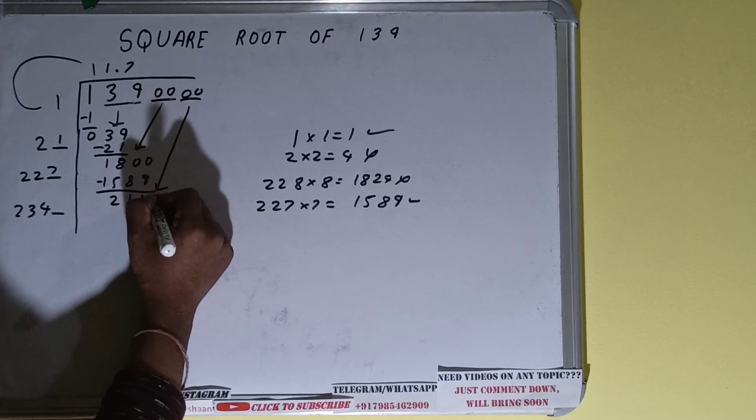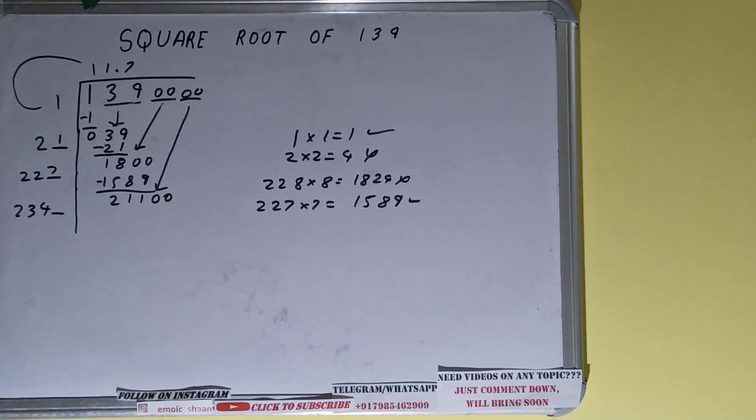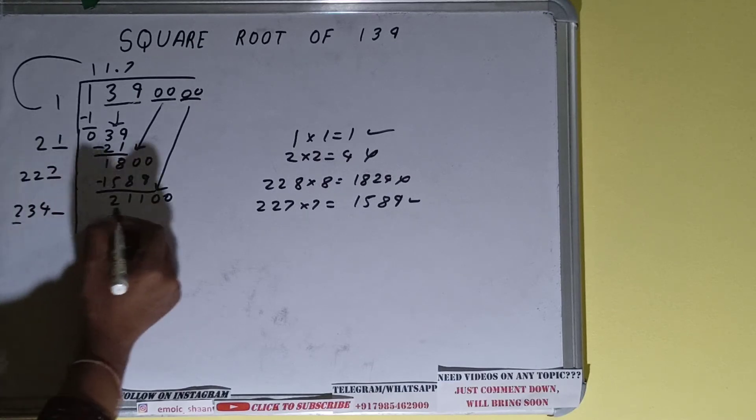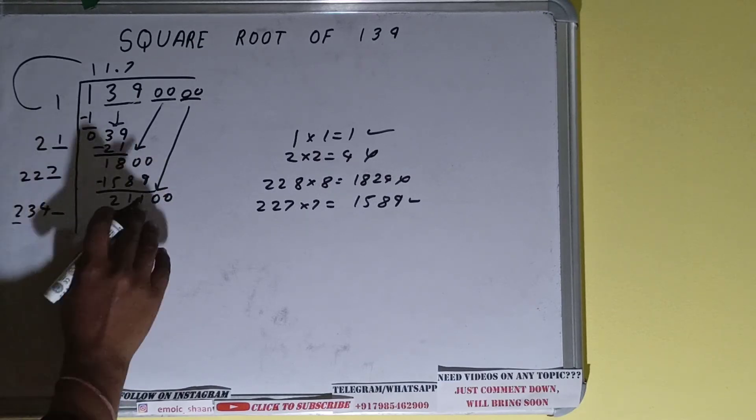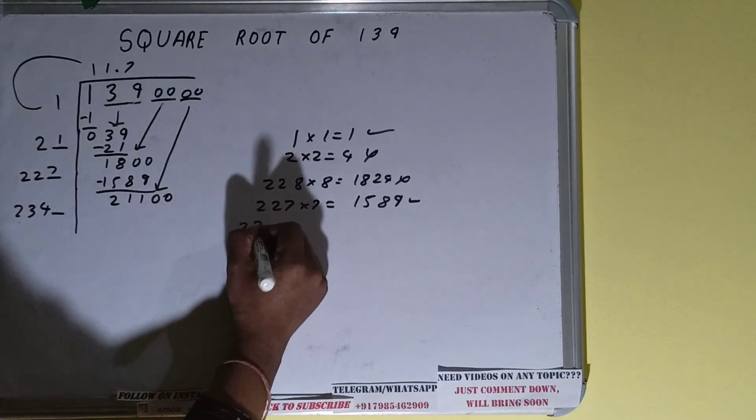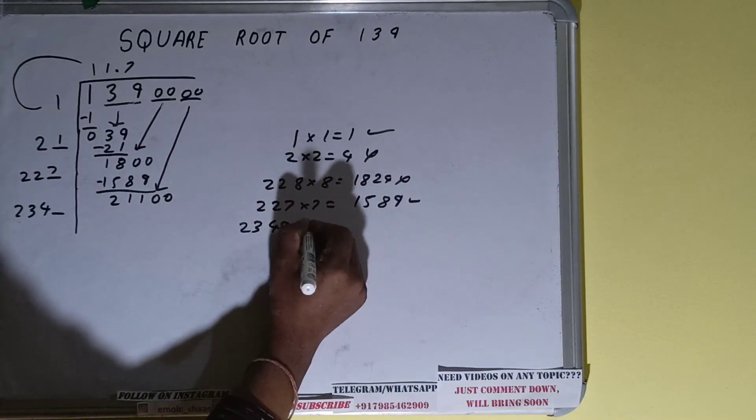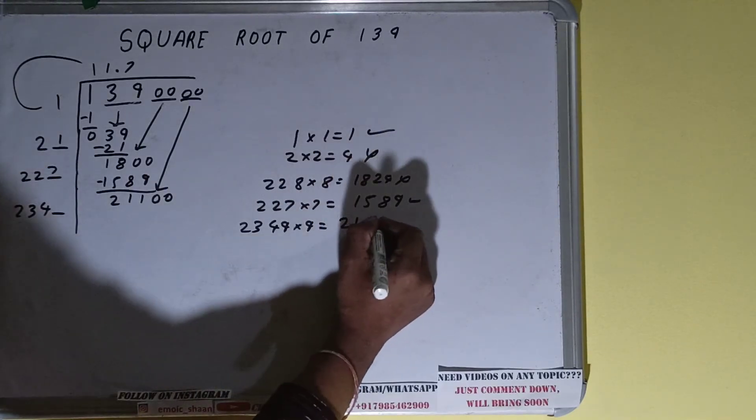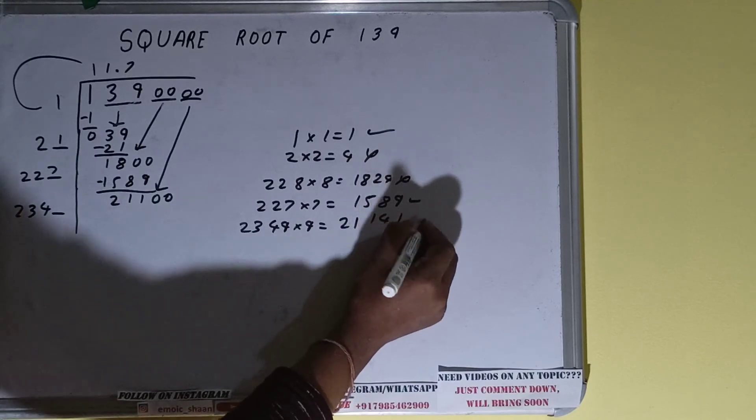We need to make this number bigger, so bring one more pair of zeros down. We already have decimal so no problem with that. Now compare this two with this 21. We can try nine times. So 2349 into 9 we can try, we'll have 21141 which is slightly bigger than the number.